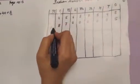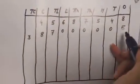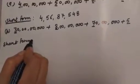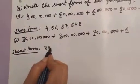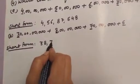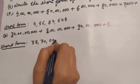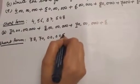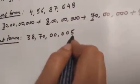The number is thirty-eight crore, seventy lakh, five. So the short form is thirty-eight crore, seventy lakh — zero in thousand, zero in hundred, zero in tens — and five.